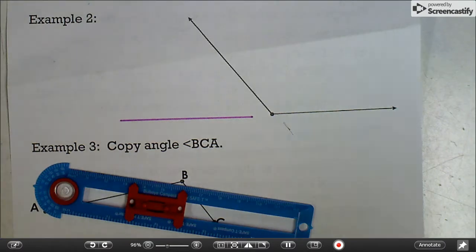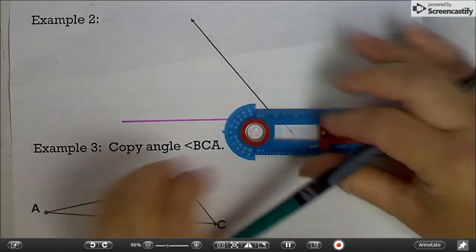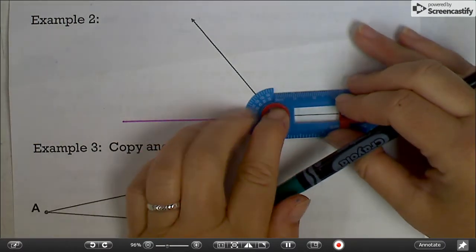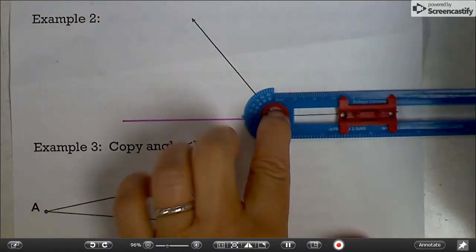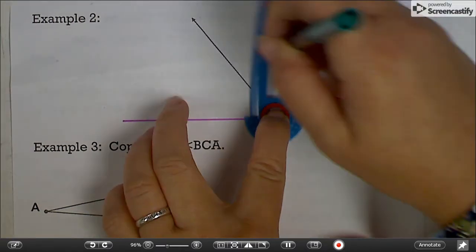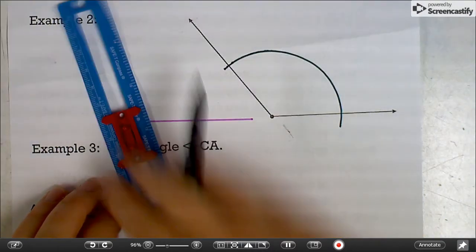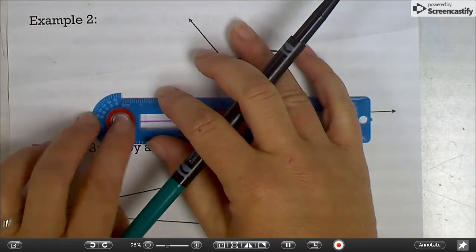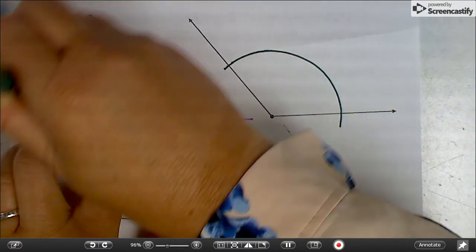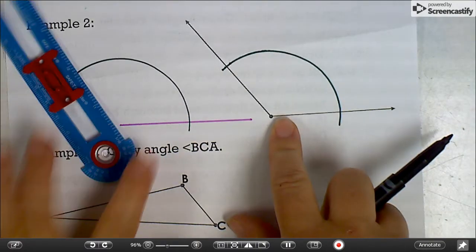So we drew the new bottom, the new segment, and then I'm going to draw the arc on the given angle. Now we want the same arc on the new angle, so I'm going to put it on the endpoint and draw the same arc. Make sure it goes far because obviously this is an obtuse angle.